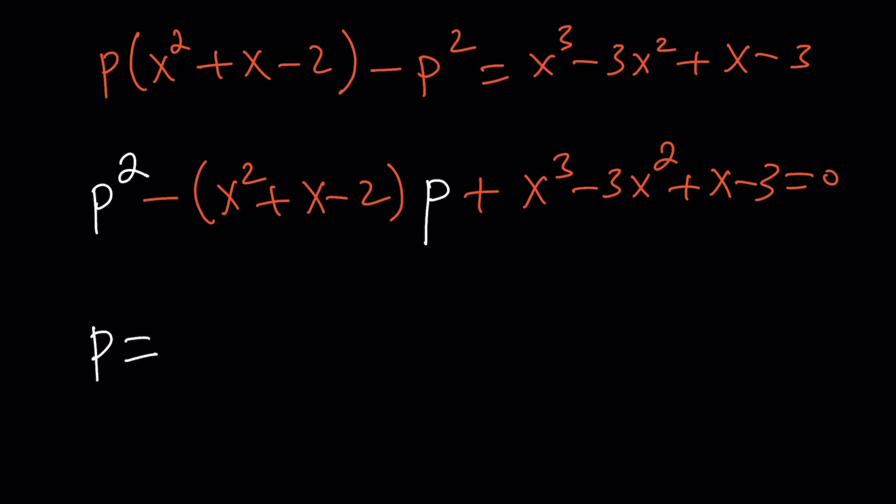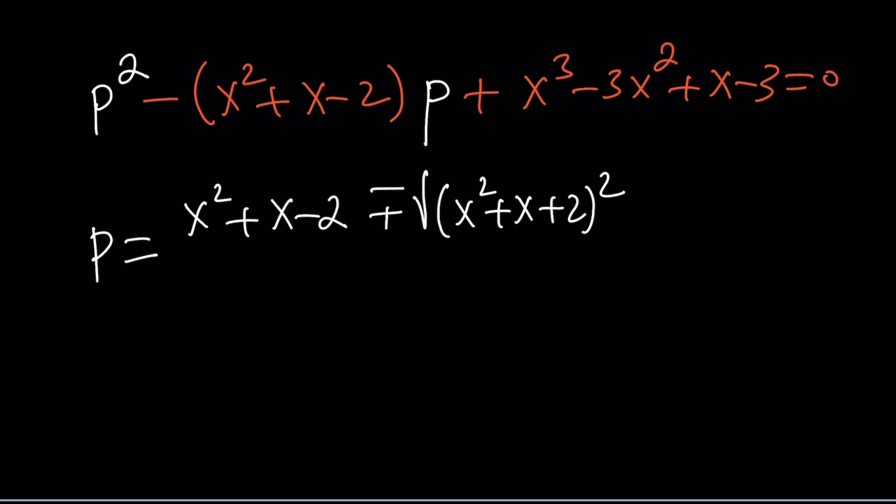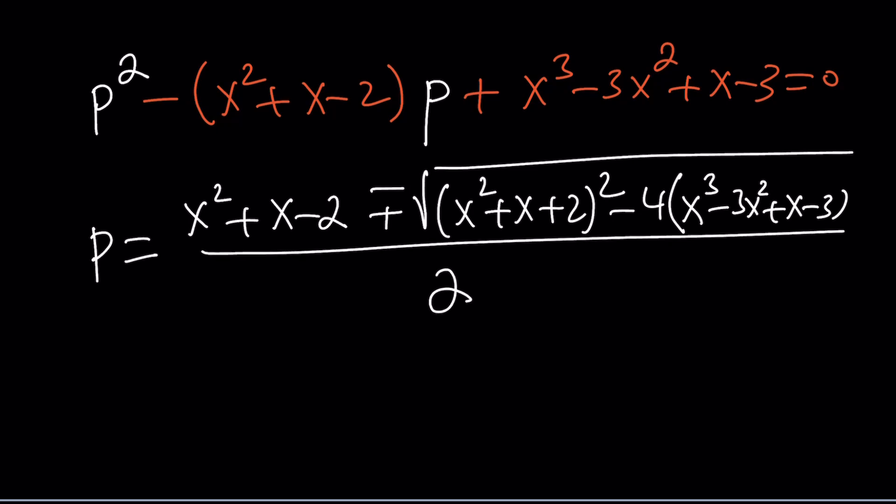So P equals negative b, which is x² + x - 2, plus-minus the square root of b². Obviously that quadratic is going to be squared - it's kind of like a quadratic within quadratic. Minus 4ac. a is 1, so I'm going to multiply the whole cubic by negative 4. So that means I have to distribute, and that's going to be under the radical - that's going to be my discriminant. In other words, delta.